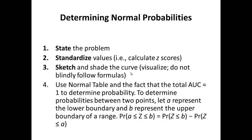Drawing the curve will help you visualize it and make sure the numbers you're getting make sense. It will also help you double-check whether the percent or the percentile rank fits with what the normal bell curve represents. The last step is to take the Z-score or Z-scores calculated, use the unit normal table to then determine what probabilities they are associated with.